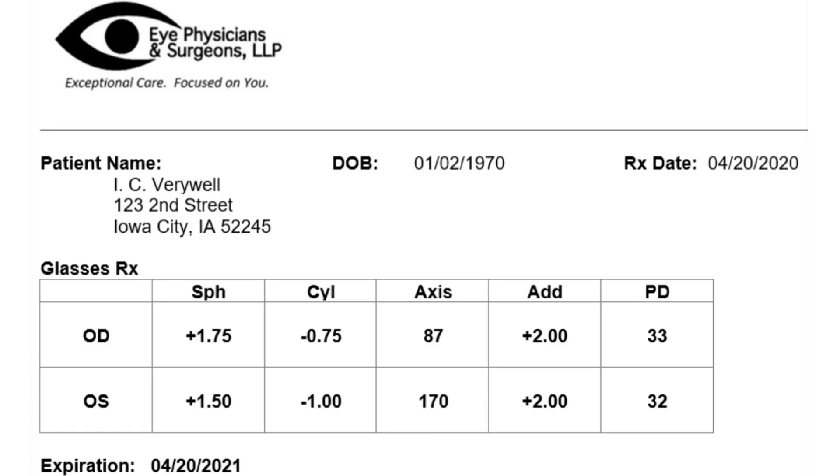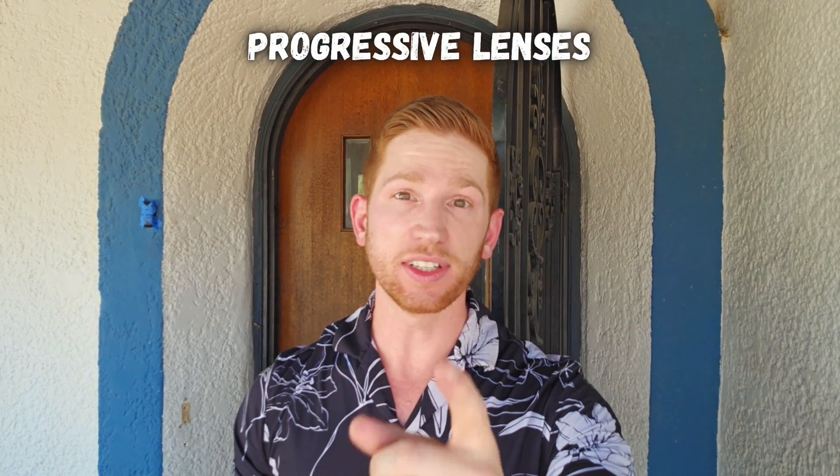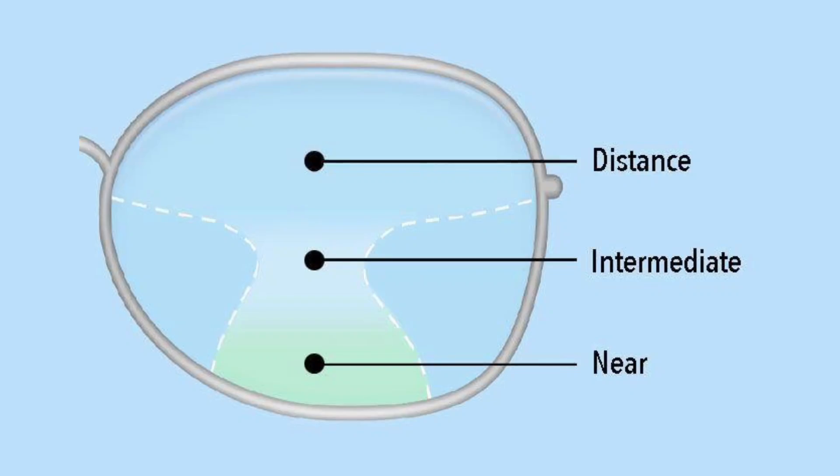But there may also be an add or addition number to your eye prescription. If you have any value there, you have progressive lenses.